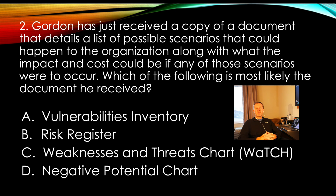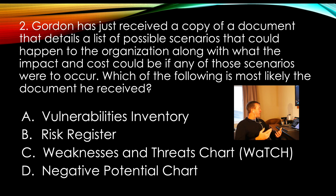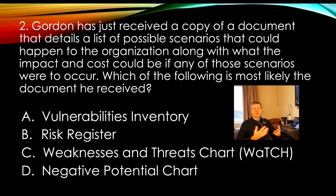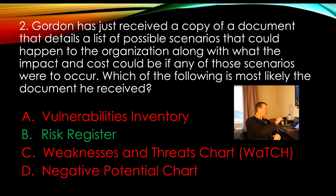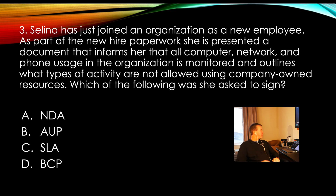When we're talking about a list of different vulnerabilities — the things that our organization could face, the negative impacts, and quantifying those — that's going to be our risk register. So we are going to be looking for B, the risk register. Let's go ahead and move on to question number three.